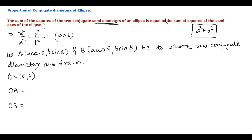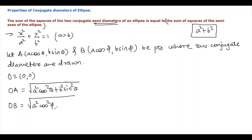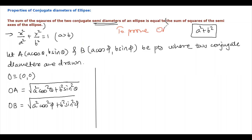OA can be written as √(a² cos² θ + b² sin² θ), and OB can be written as √(a² cos² φ + b² sin² φ). What we have to prove is OA² + OB² = a² + b². So I am going for OA² + OB².